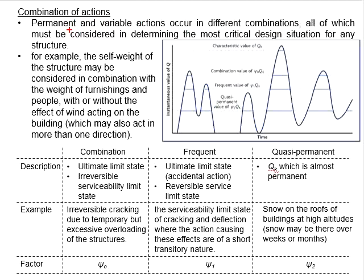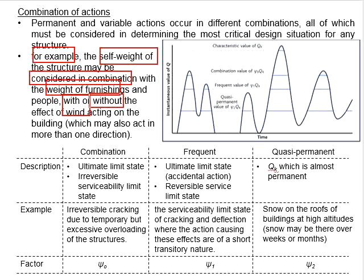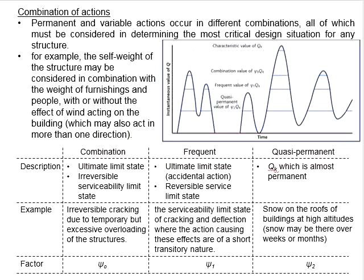As variable actions can appear in different combinations, all combinations need to be considered in order to determine the most critical design situations. For example, the self-weight of the structure may be considered in combination with the weight of furniture, with or without the effects of wind. This leads to different types of design considerations of load combinations.